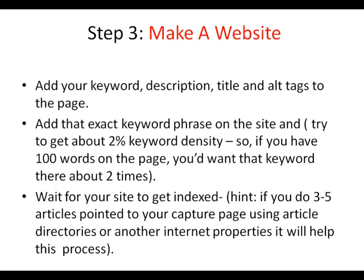We're on to step three. You need to make a website. You need to add your keyword, description, titles, and alt tags to your website page. Once you've done that, you need to add the exact keyword phrase on the site and try to get about a 2% keyword density. So if you add about 100 words on the page, you want to try to get that keyword in there about two times. Since we're using the example of marketing MLM training, we'll want to make sure that's on the page at least 2% of the time. Once we've done that, we'll want to wait until we get our site indexed, which usually takes three to five days. To speed up this process, we would want to add or point three to five articles to our capture page using article directories or other internet properties to make this process go faster.